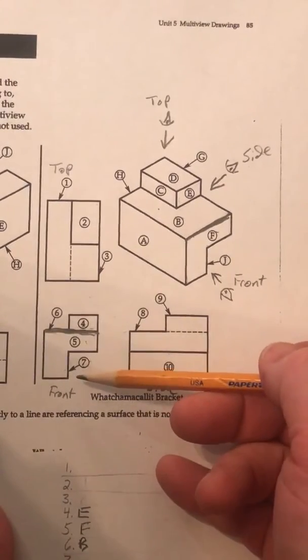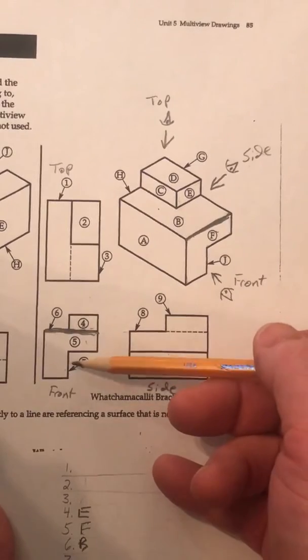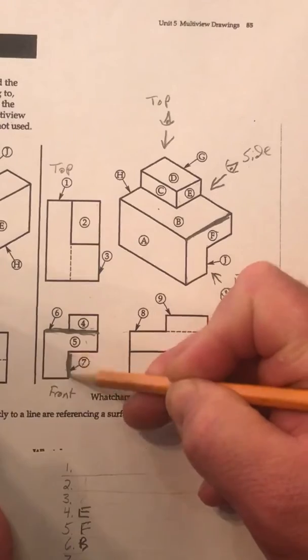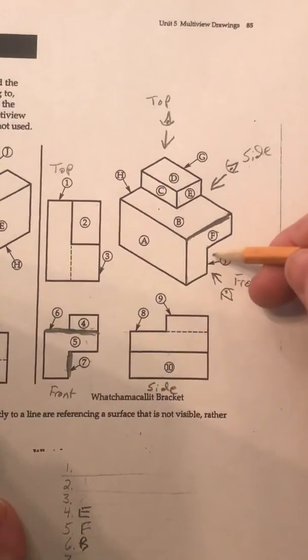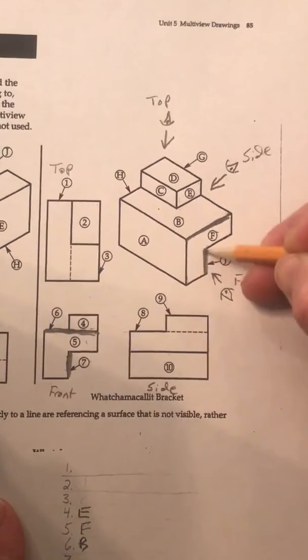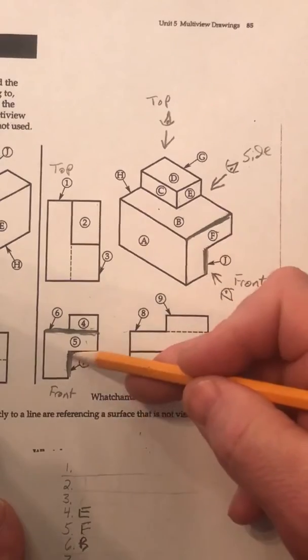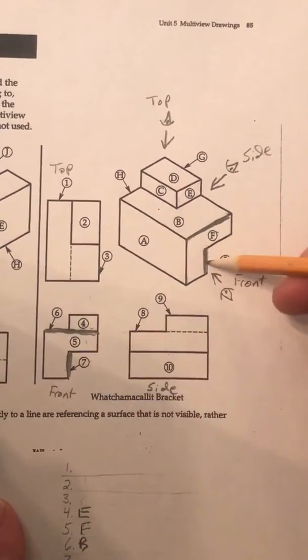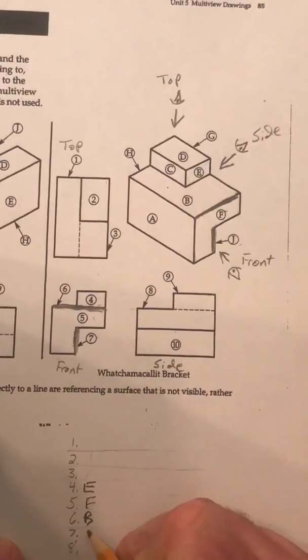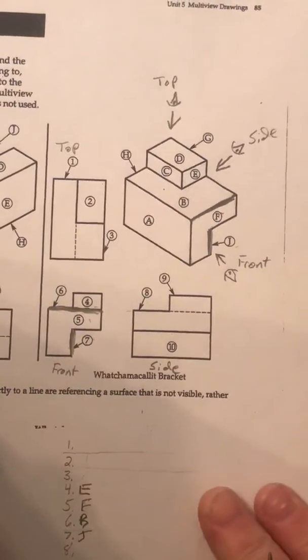Now, number 7 is trickier. It's pointing to this edge, right here. So, as I'm looking at that, so I come back over here into my isometric, my 3D pictorial here, and I can see, well, now I can clearly see, as I look at this, and notice that 7 corresponds with letter J. So, I'm going to go ahead and put letter J in there.